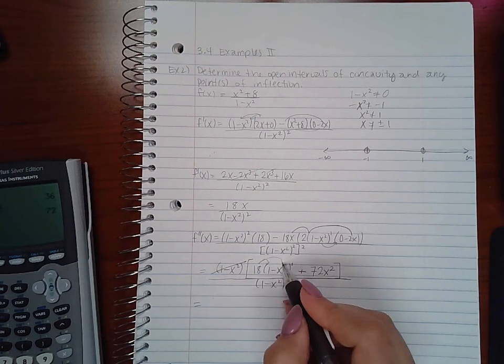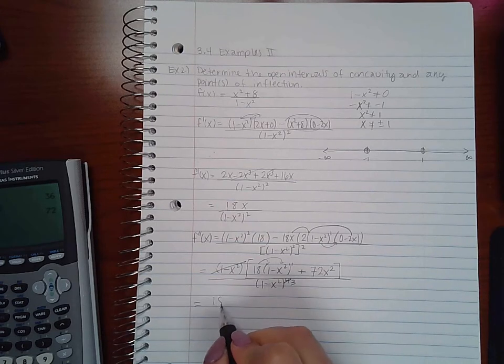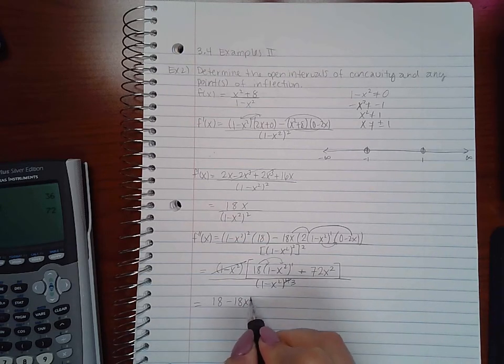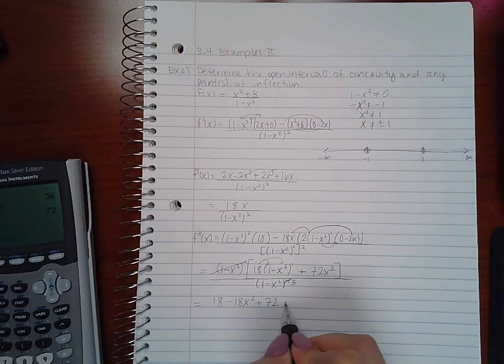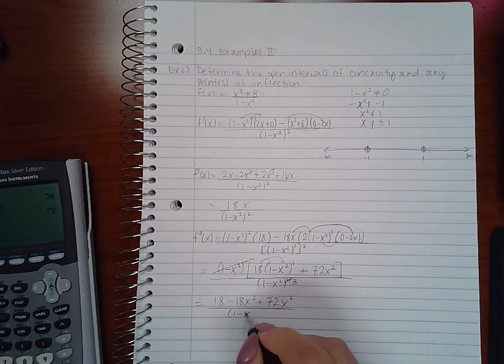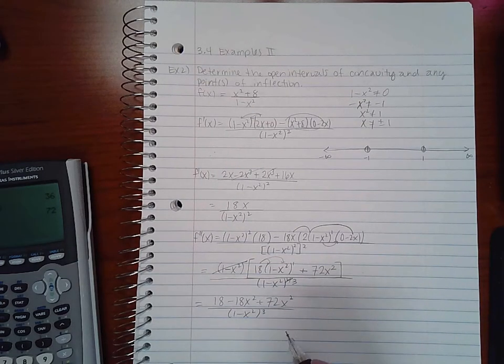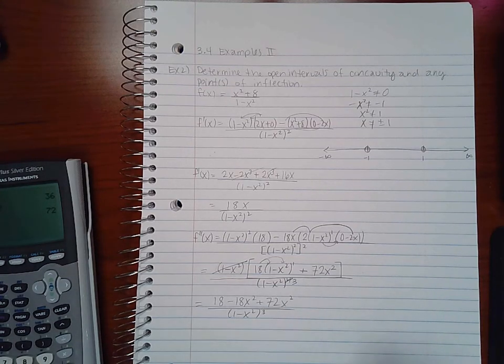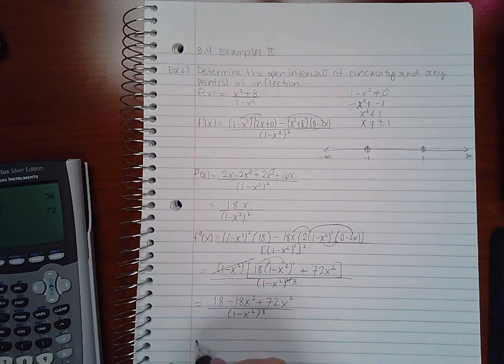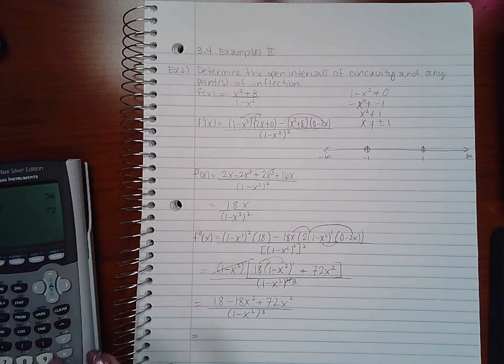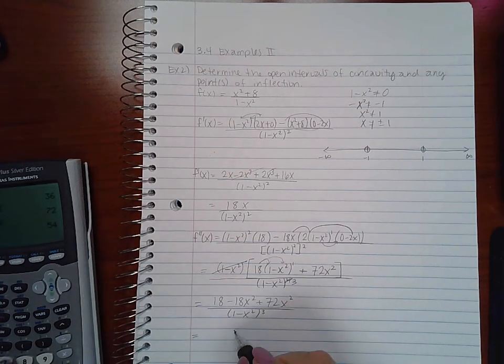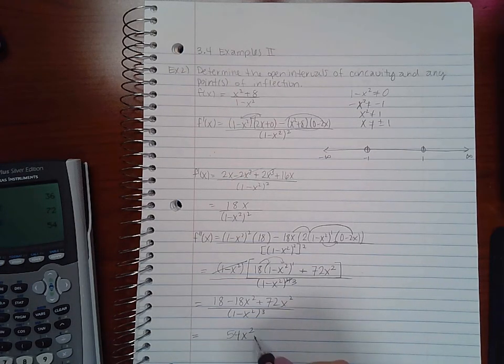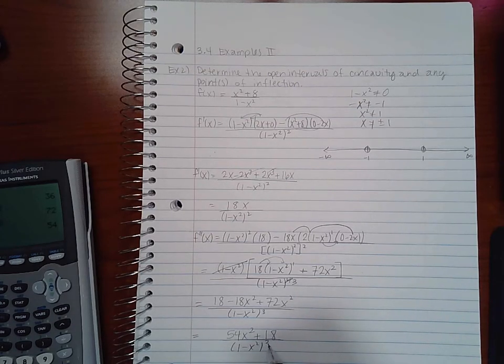And I'm going to go ahead and distribute my 18. And so then I end up with this here which will reduce to -54x² + 18 over (1 - x²)³.